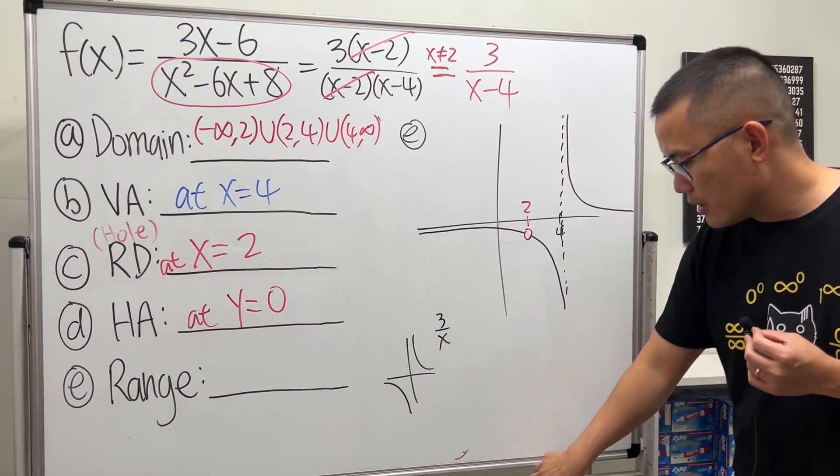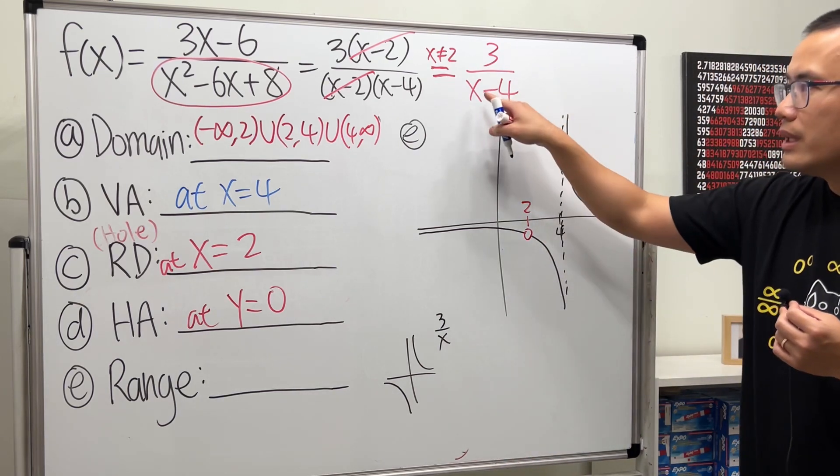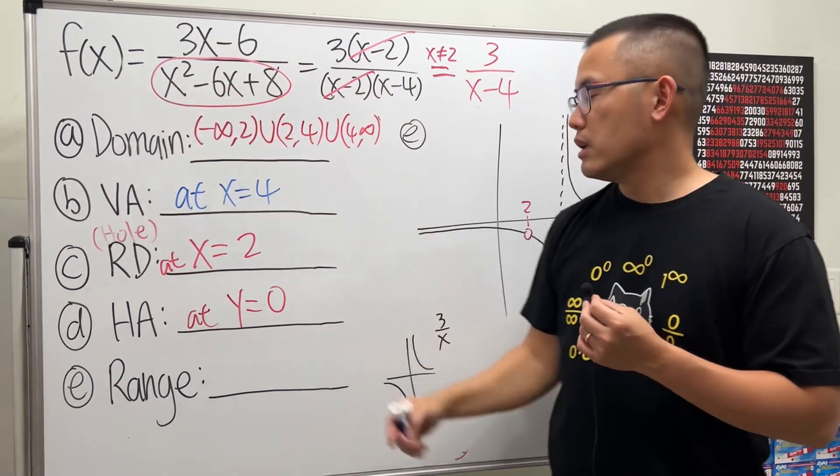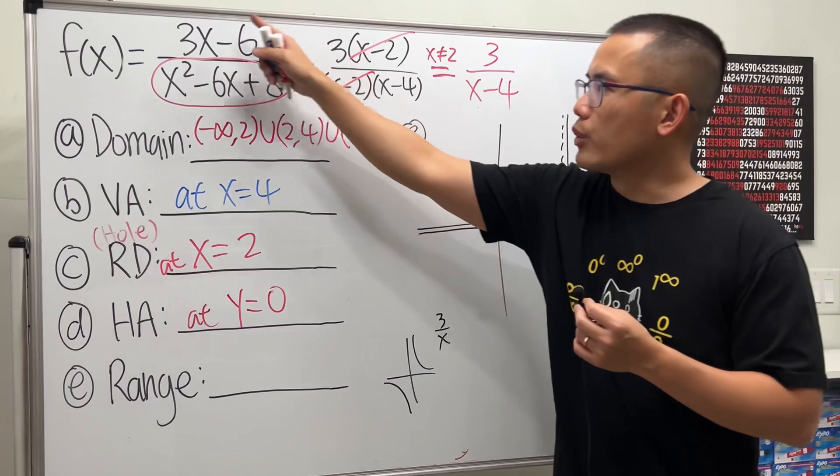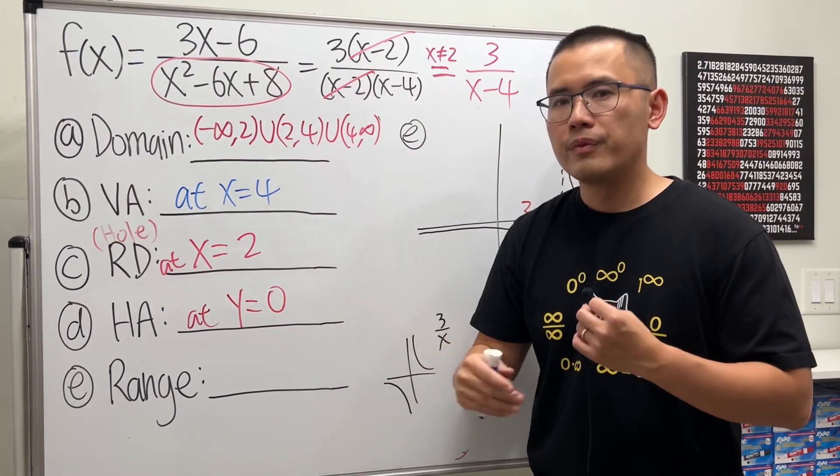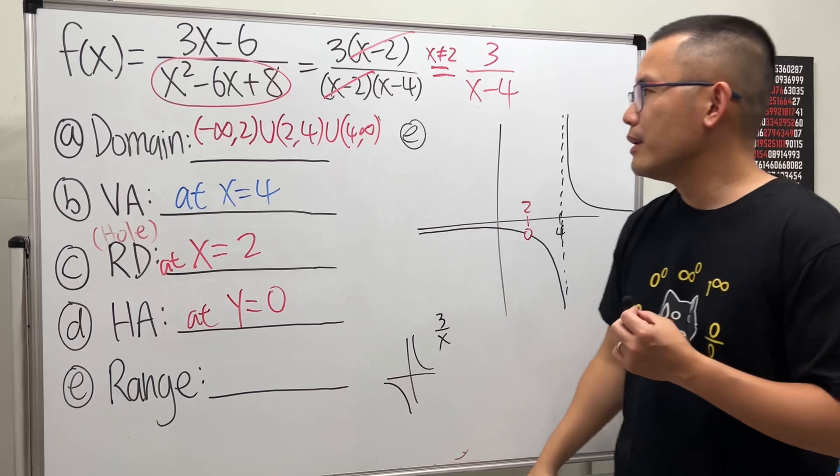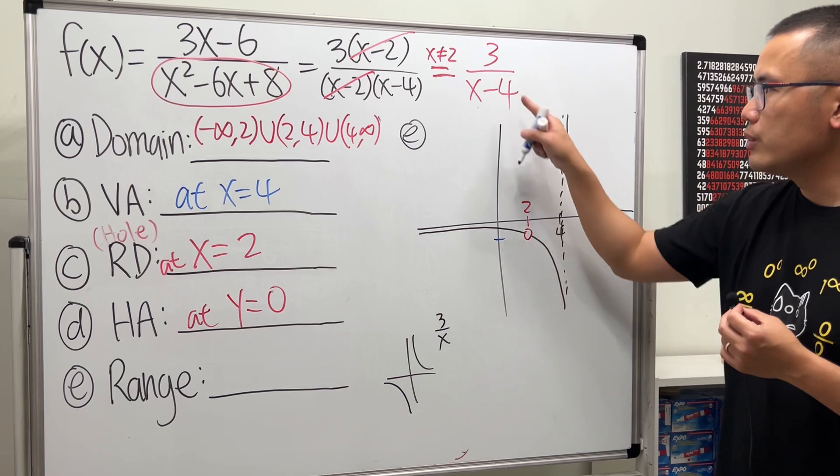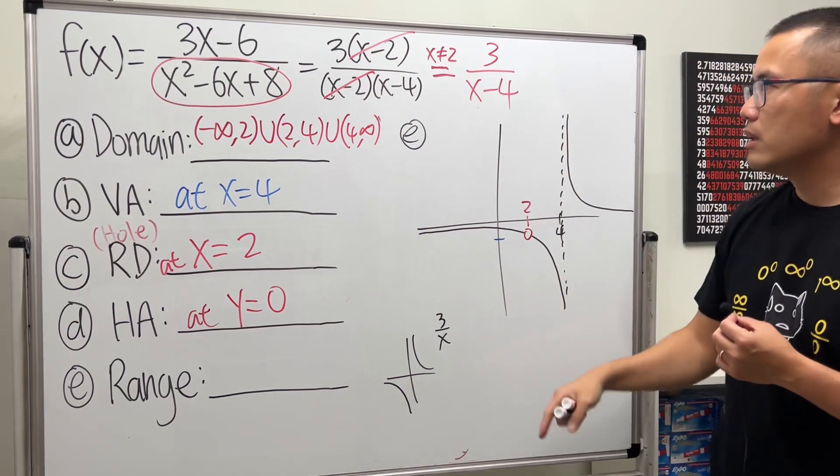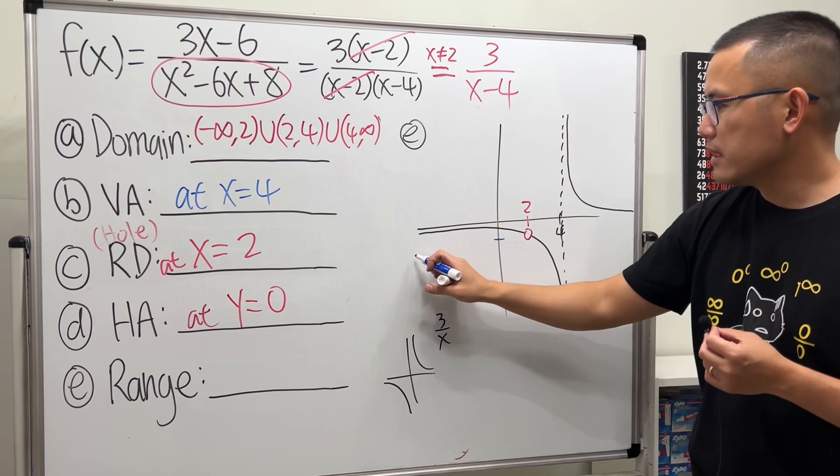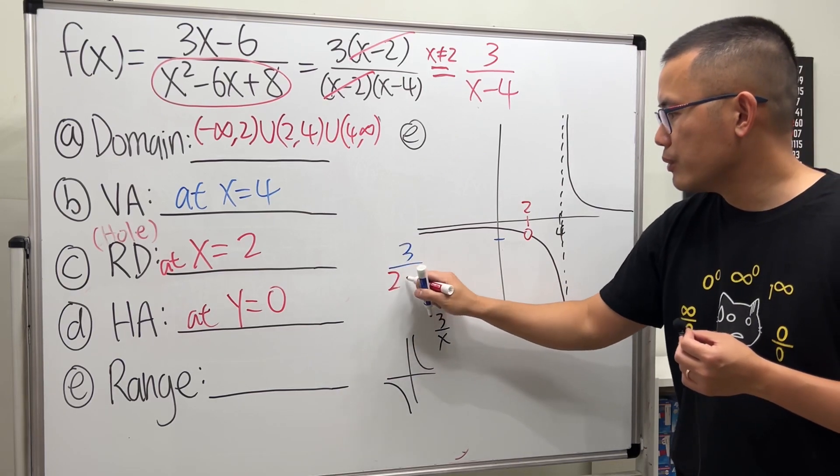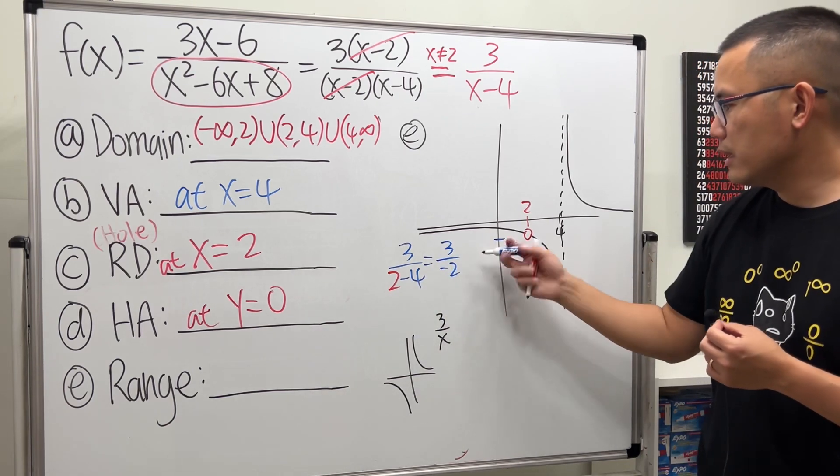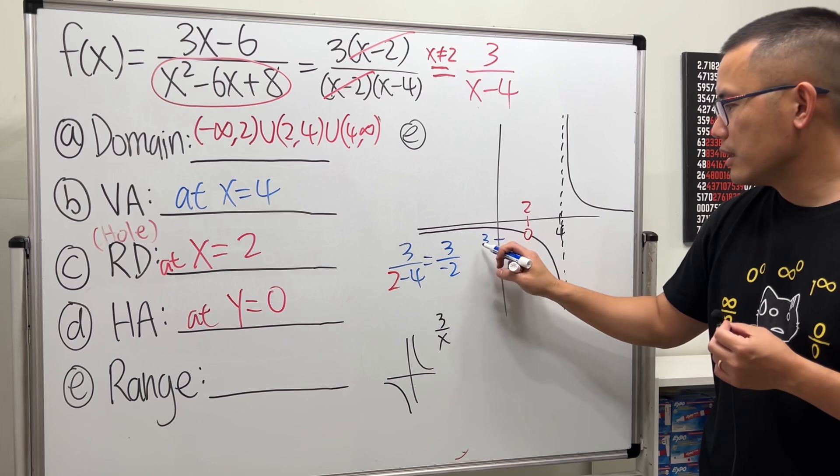This right here, it's exactly when we plug in 2 into this x, into this expression, not the original one. If you plug in 2 into the original one, you will get 0 over 0. That tells you that there is a hole. But we want to find out the y value of the hole, then you just put 2 into the canceled version, after the reduced version. So, just work that out. We will get 3 over 2-4. And that's just 3 over negative 2. And that's it. So, this right here is negative 3 halves.